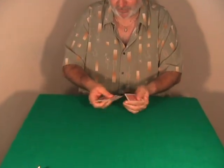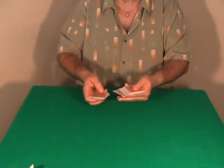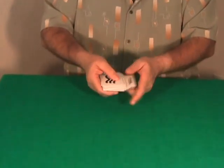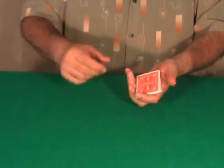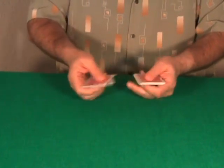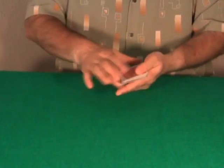I repeat, this is one of the most beautiful routines with ESP cards. You show a shuffled deck and, like I said in the introduction, you can start the routine with the Charlier Shuffle, do it as many times as you want to give the impression that you are shuffling the deck.